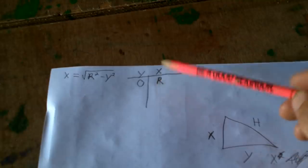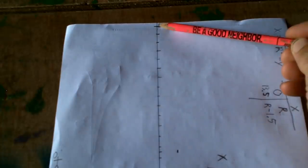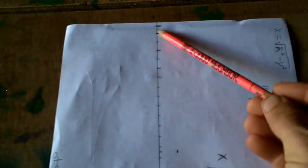When y is 0, x is the radius. Now let's figure out that other spot. When y is 13.5, the x is the radius minus 1.5. So x is r minus 1.5.